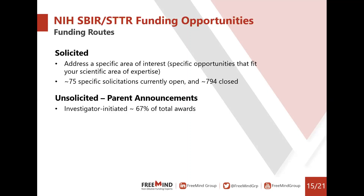At this point in time, there are about 75 specific solicitations open from the NIH, and about 800 have already closed since the beginning of the year. If you do not find a specific opportunity that fits your project, you can go for the unsolicited approach — also called the parent announcement or investigator-initiated, or in the SBIR/STTR world, the omnibus solicitation. In fact, 67% of total awards stem from the parent announcements.